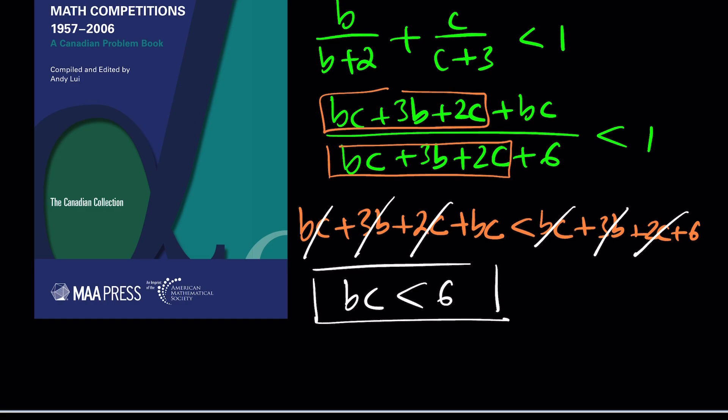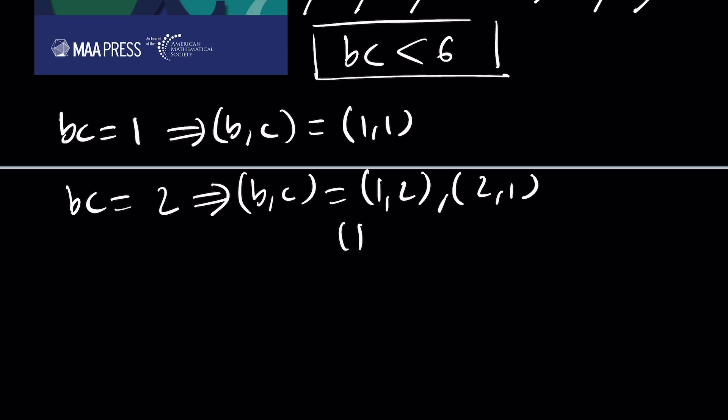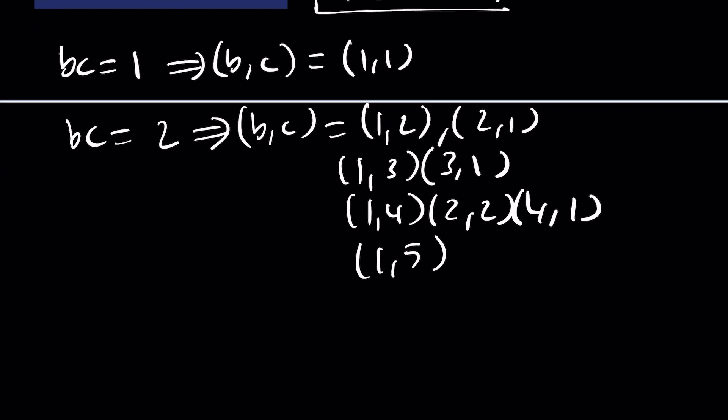This is a huge improvement because this gives us an upper bound. We need to make sure that when we check values of b and c as positive integers, their product needs to be less than six, which means their product can be five, four, three, two, and one. For example, if bc equals one, this means b and c can only be one one. And if the product of bc is two, then we get bc as one comma two or two comma one. That gives us two solutions. And then for three, we get one three and three one, and then we get one four, and then two two, and then four one, and finally five when bc is five, you get one five and five one. That's it. We only have like 10 possible cases.